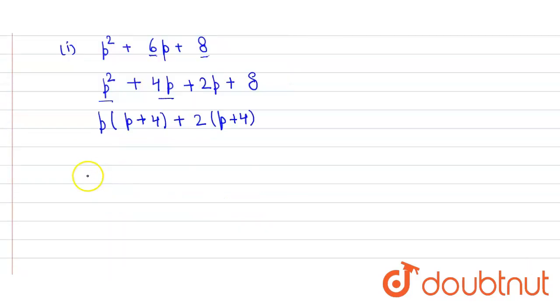Now from the whole expression we take p + 4 common, so we get (p + 4)(p + 2). This is the factorization of the given algebraic expression, and that's the answer for the first part.